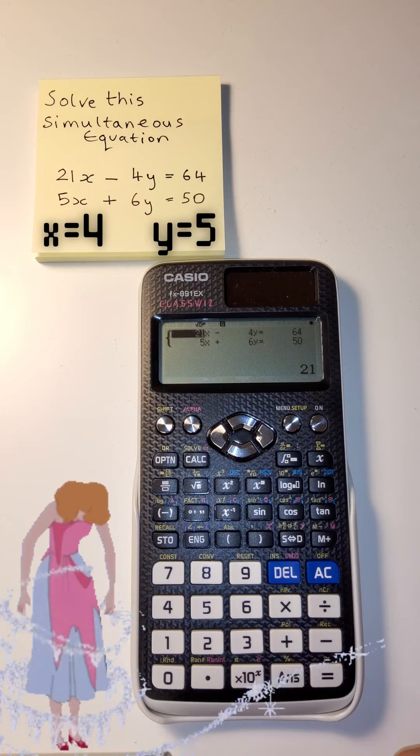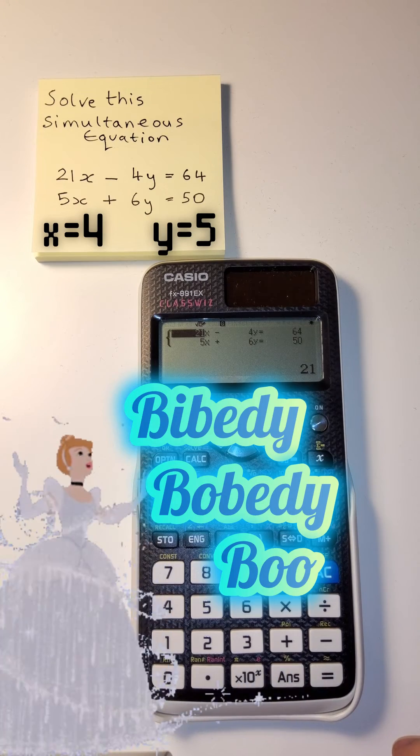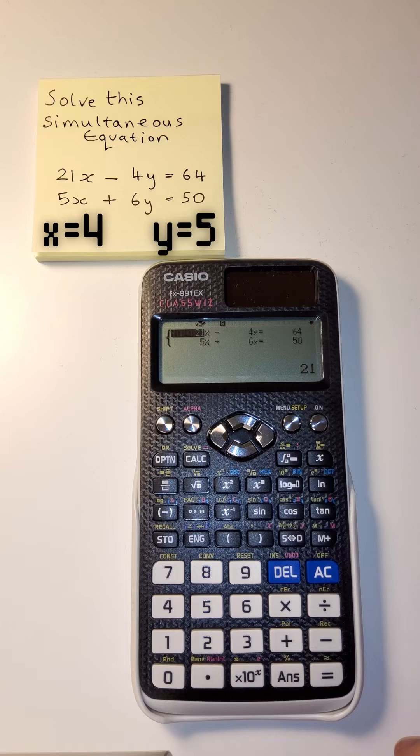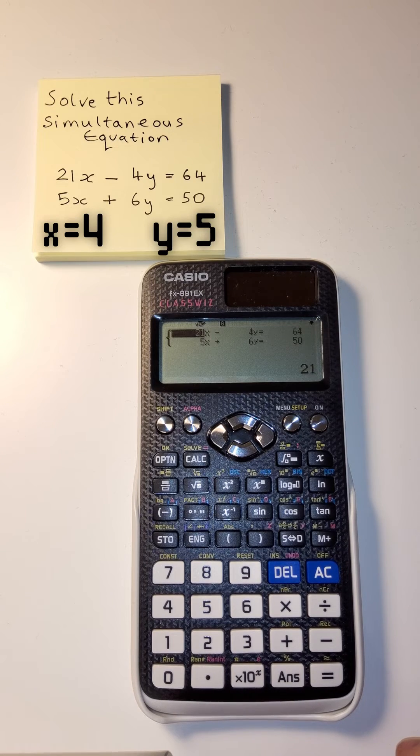Press equals again. You come back around and you can do another simultaneous equation or you can edit what you've done. Say you made a mistake and you can go again.